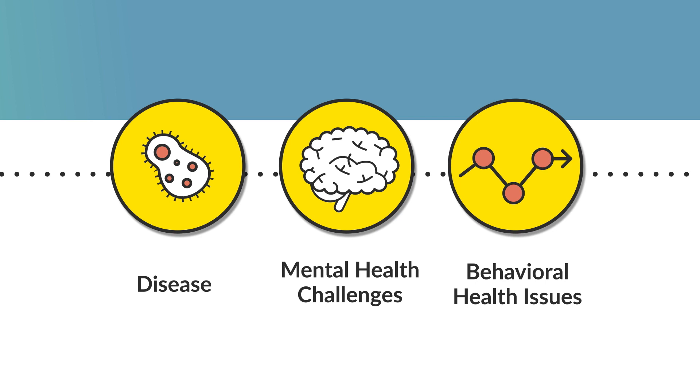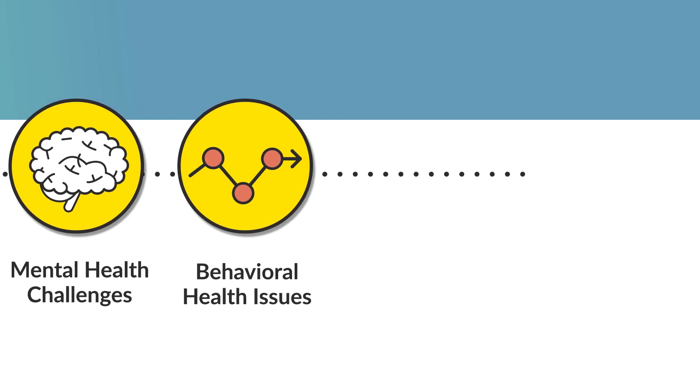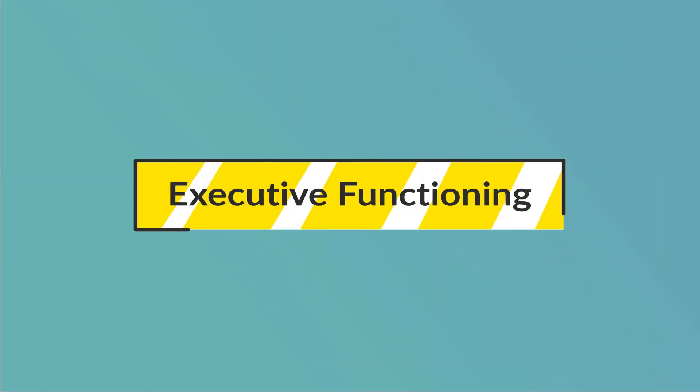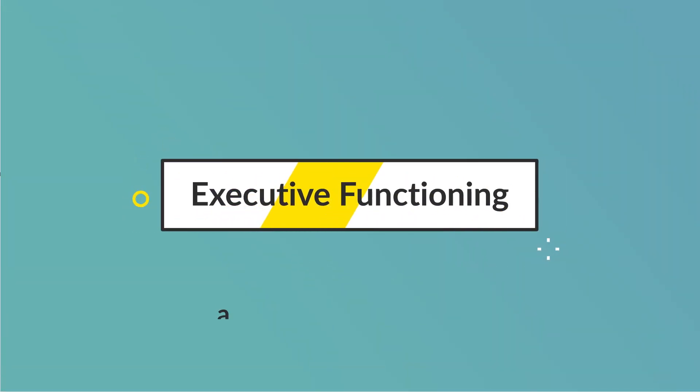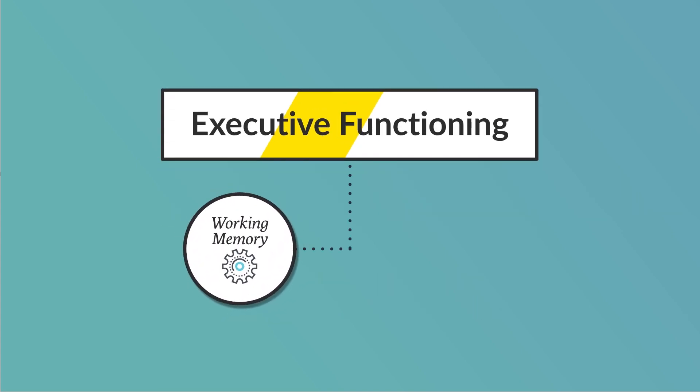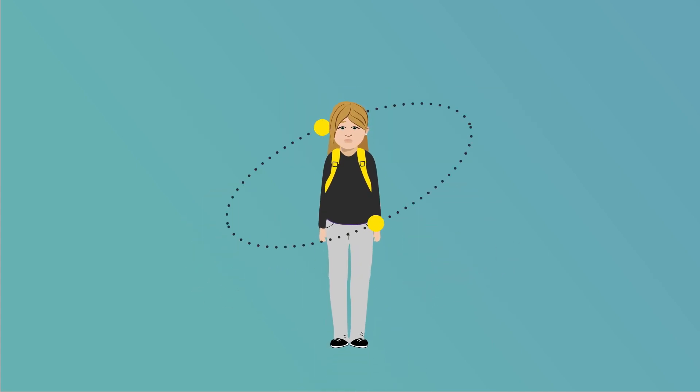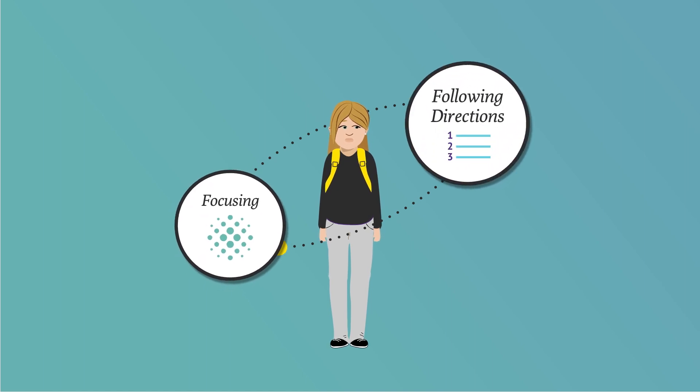Children exposed to toxic stress and early adversity may struggle with learning to regulate their emotions. They may have difficulty developing executive functioning, a mental skill set critical to success in school and life that includes things like working memory and self-control. A child who has difficulties with executive functioning may have trouble focusing and following directions.